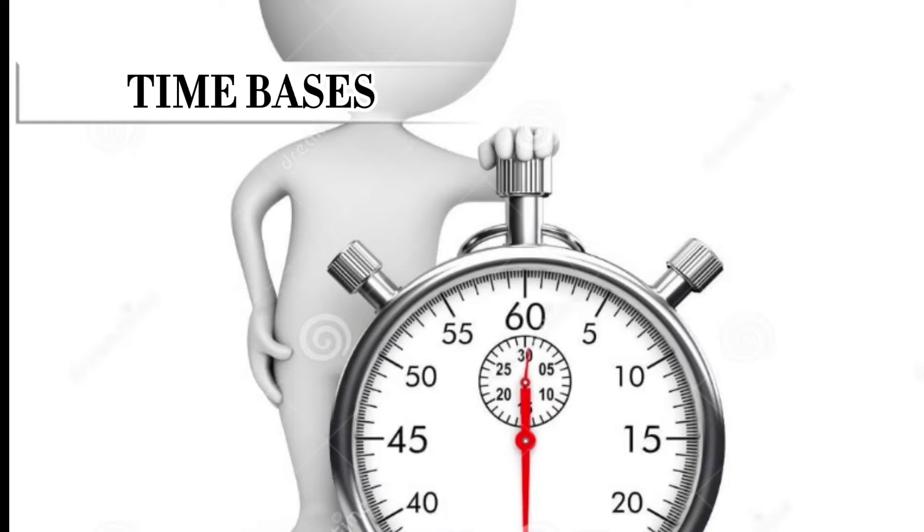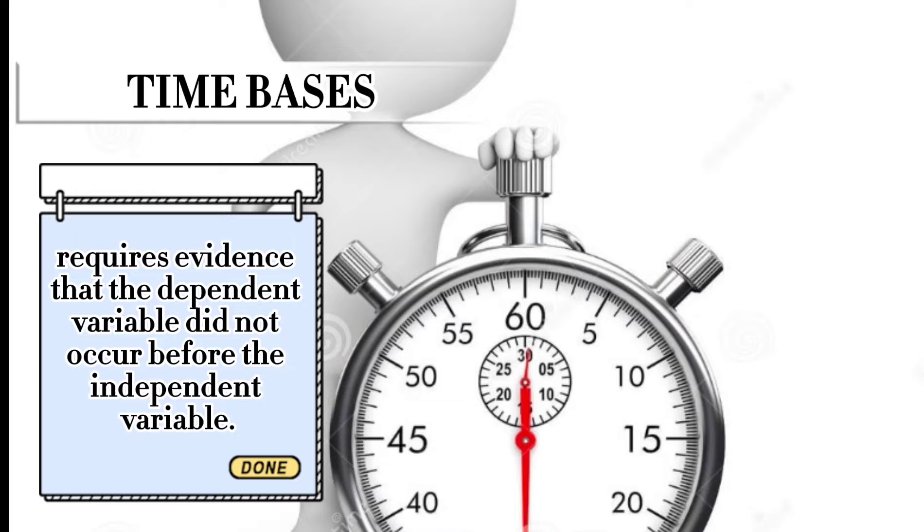A second basis for inferring a causal relationship between two variables relates to the time order of occurrence of the variables. To establish the necessary time order requires evidence that the dependent variable did not occur before the independent variable.